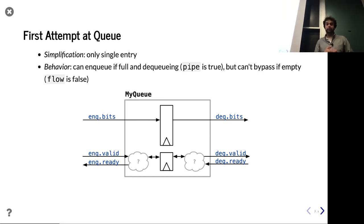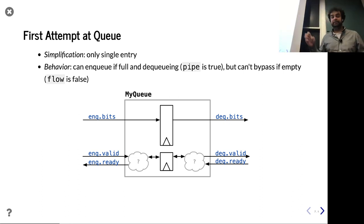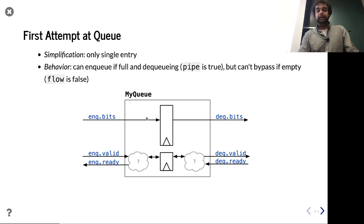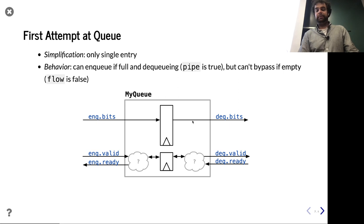Our V0 queue is going to have a single entry. We're not going to parameterize the type — or we could parameterize it — but single entry is the key point. What do we need for a queue? We need a single entry: bits come in, bits come out. We need to handle ready-valid handshaking on both sides. We're also going to need a one-bit register to keep track of whether the queue is empty or full.